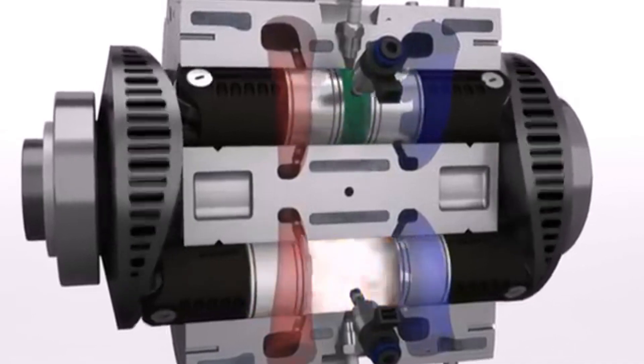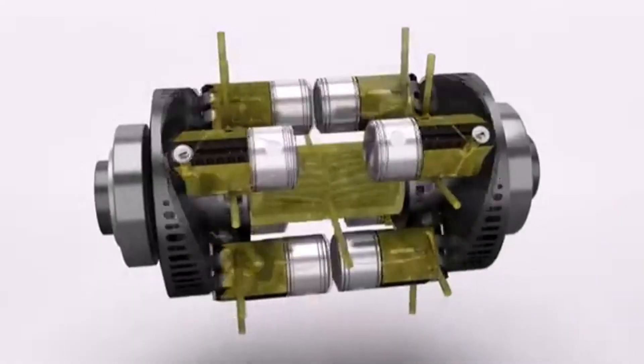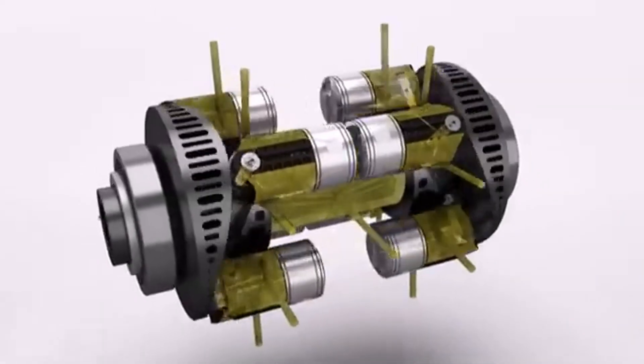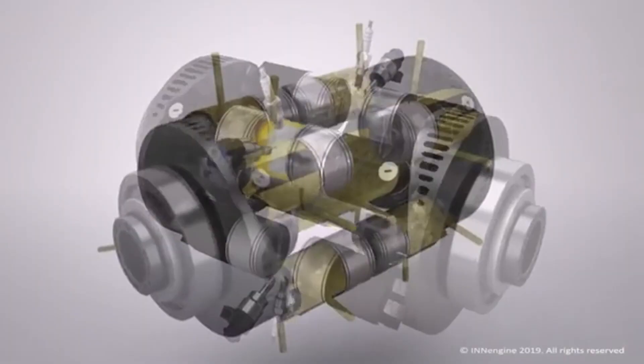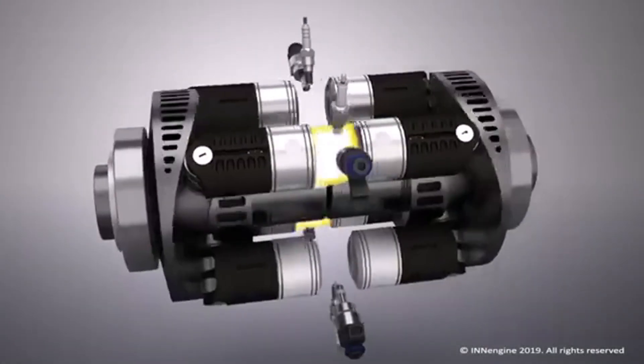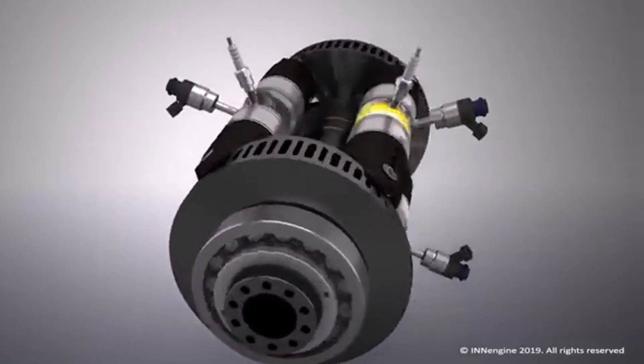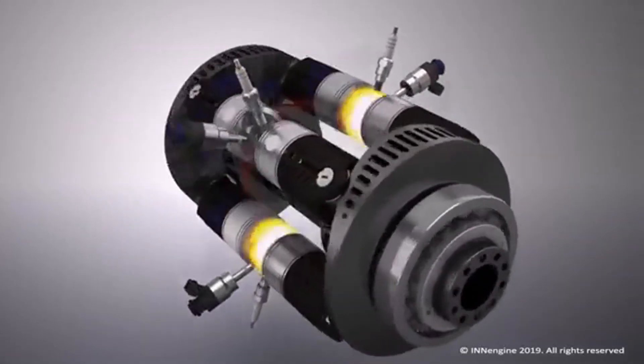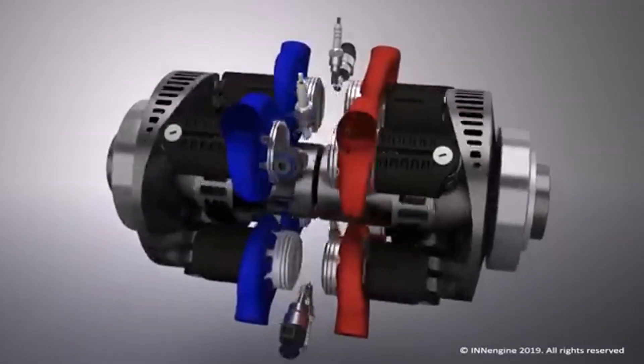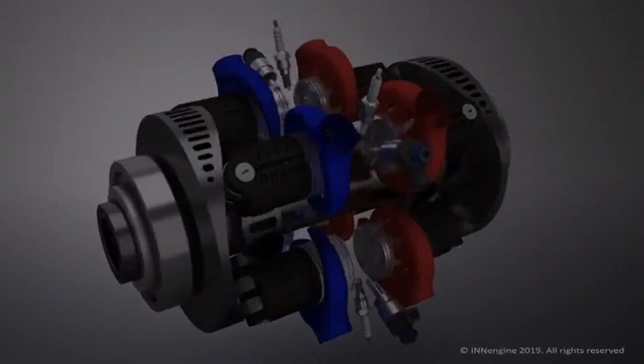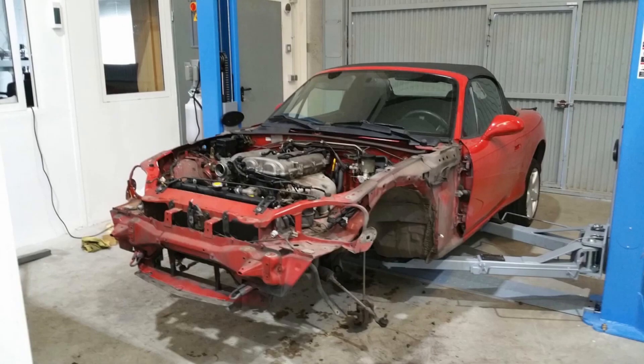However, it does not have the drawbacks associated with two-stroke engines since there's no need to mix oil with fuel, and the intake and exhaust are located in the cylinder wall. As a result this engine is even more efficient than a four-stroke engine, environmentally friendly, much lighter and smaller in size. To demonstrate its capabilities they have installed this engine in a Mazda MX5.